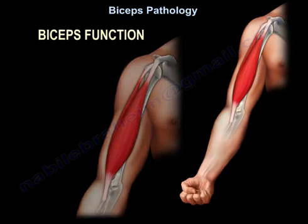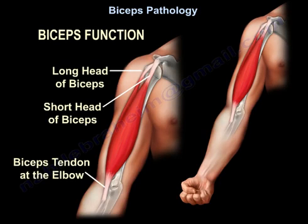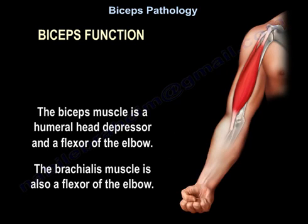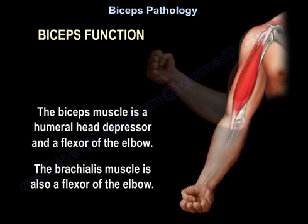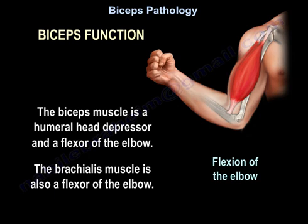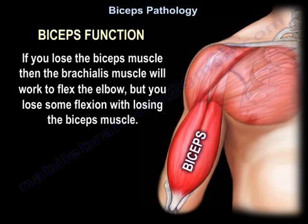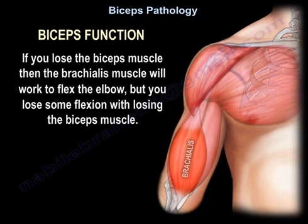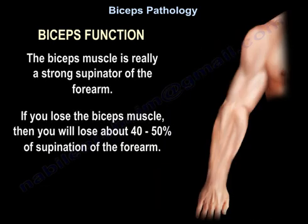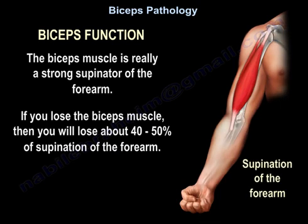What is the function of the biceps? It is a humeral head depressor. It is a flexor of the elbow, but the brachialis also flexes the elbow — if you lose the biceps, the brachialis still works, though you lose some flexion. The biceps is really a strong supinator of the forearm; if you lose the biceps, you lose about 40 to 50 percent of supination.